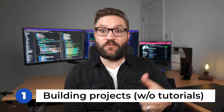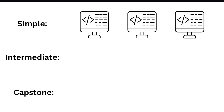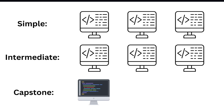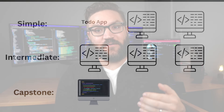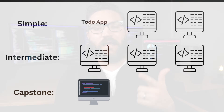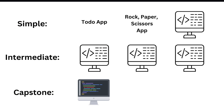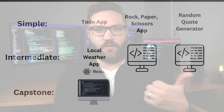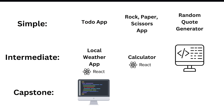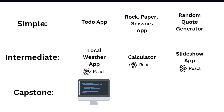There are two ways that I think are best for engaging in real practice. The first is to start building projects without tutorials. Don't pick a very hard project for your first project. I recommend starting with three easy projects, three intermediate projects, and one really hard project. For the first three easy projects: a to-do app where a user can input and cross out items, a rock-paper-scissors game, and a random quote generator. For intermediate projects, I would build three in a modern JavaScript framework — I recommend React: a weather application, a calculator app, and a slideshow app.